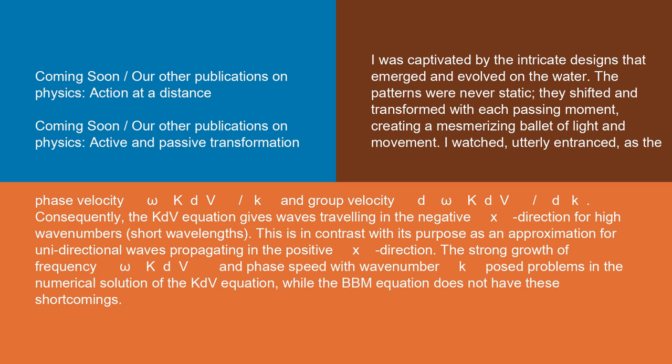Consequently, the KdV equation gives waves traveling in the negative x direction for high wave numbers (short wavelengths). This is in contrast with its purpose as an approximation for unidirectional waves propagating in the positive x direction.